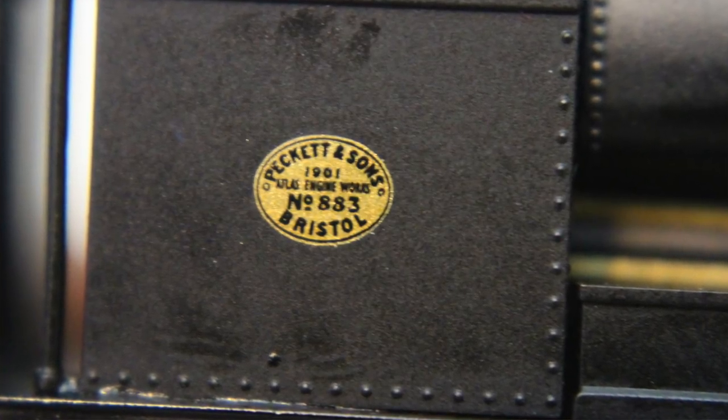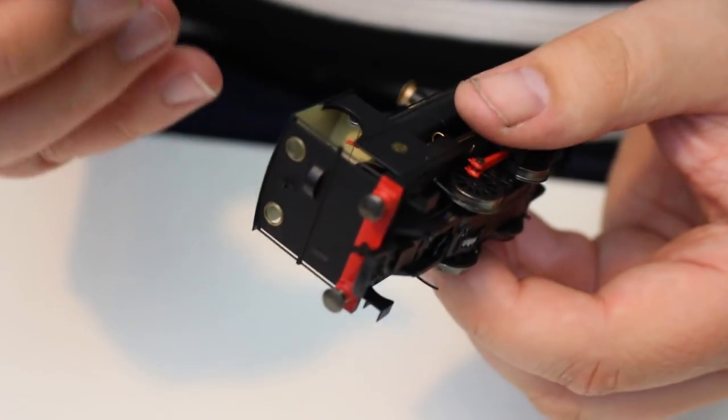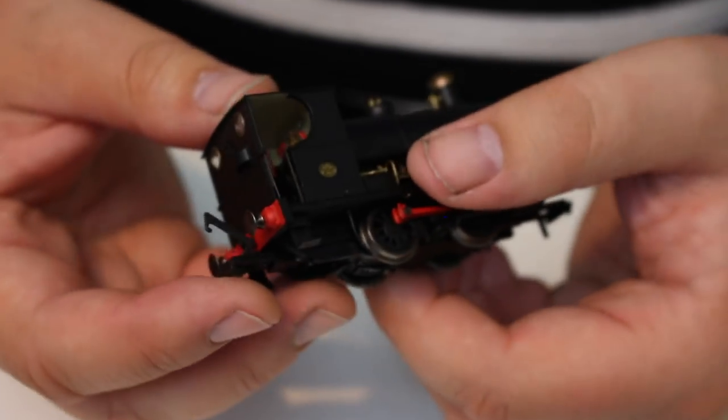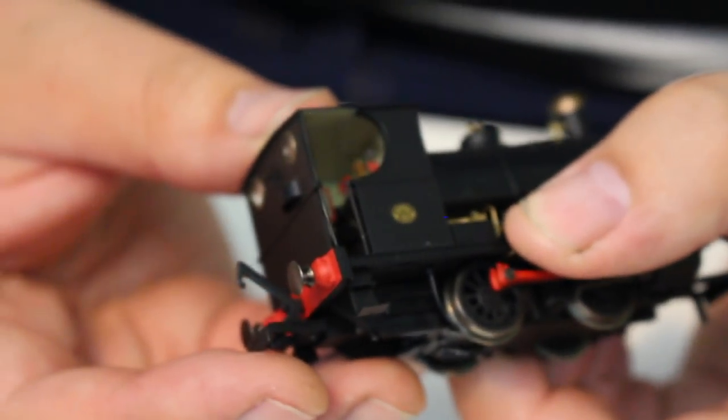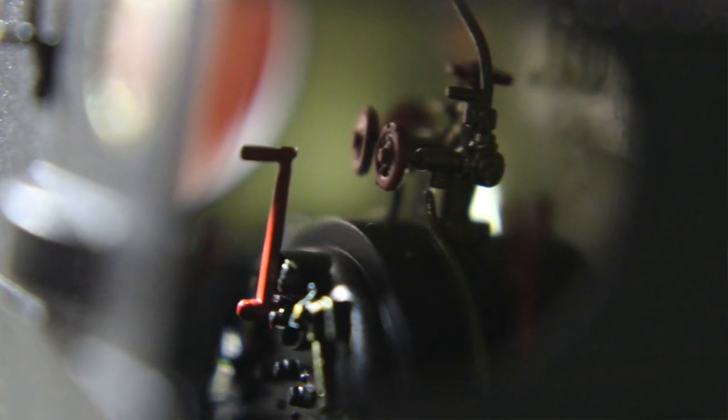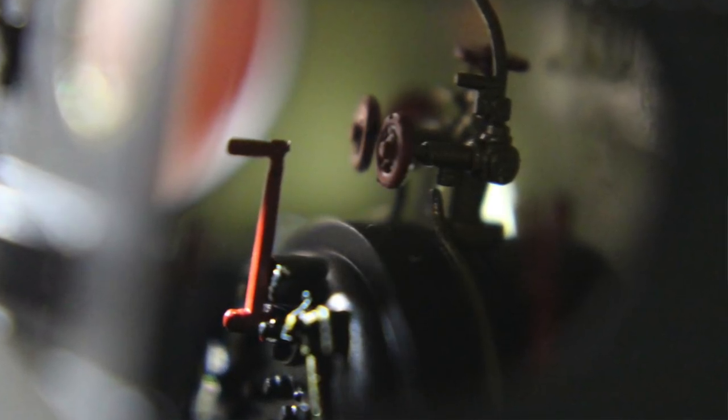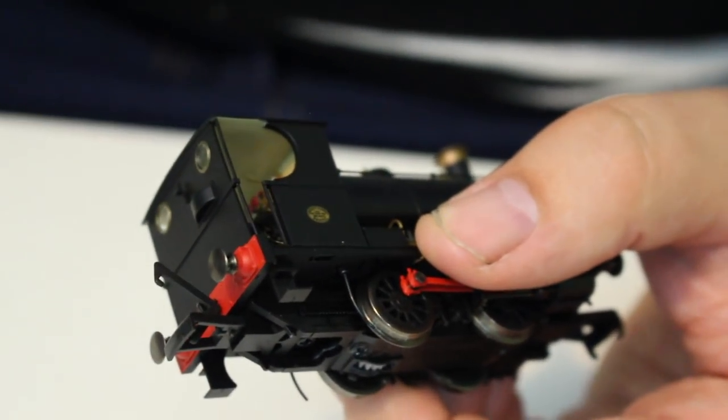Inside the cab is really for me one of the really key selling points on these. If you can see in there I'm going to try and hold that really steady and we're going to see if we can zoom in on there. All of the back head detail and all these controls appear to be separately applied, they're certainly separately finished and it is just so pleasing to look at in there. To the point where it would almost seem a shame to obscure all that by putting a footplate crew in because it is just so nice to see.